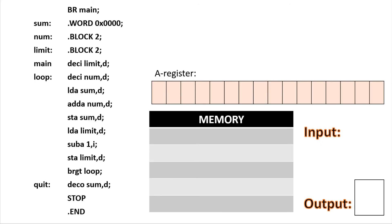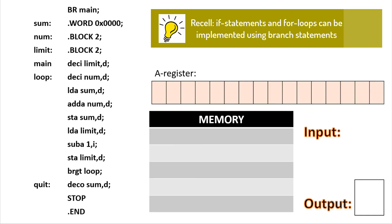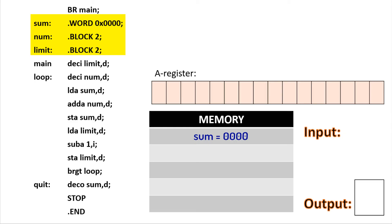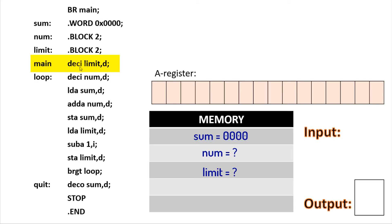Let's look at one more assembly program, which makes use of a loop in its implementation. There are three variables in this program: sum, which we allocate a word length of space for; num, which we allocate two blocks of space for; and limit, which we also allocate two blocks of space for. We begin with the first instruction, branch to main. Once we branch to main, we see the instruction decimal input into limit. Let's input a two. The next instruction, referenced by the word 'loop', tells us to input a number and store it into num. Let's input a five.